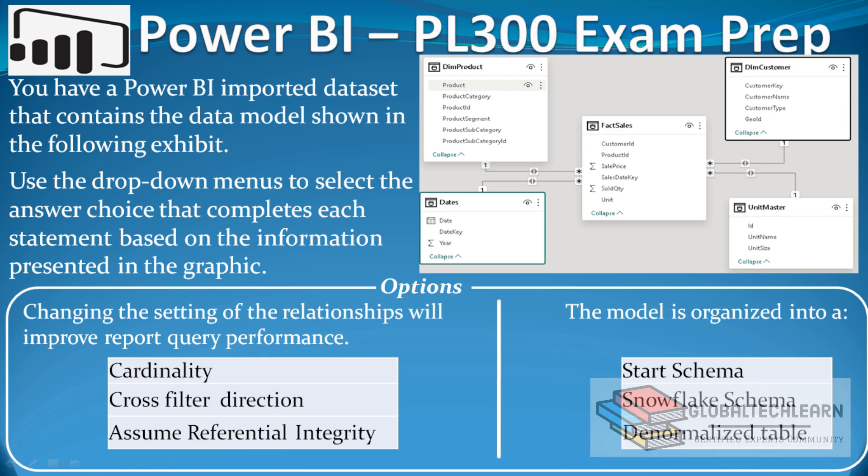The questions are: changing the setting of the relationships will improve the report query performance — under that we have cardinality, cross filter direction, and assume referential integrity. The second question is: the model is organized into a star schema, snowflake schema, or denormalized table.